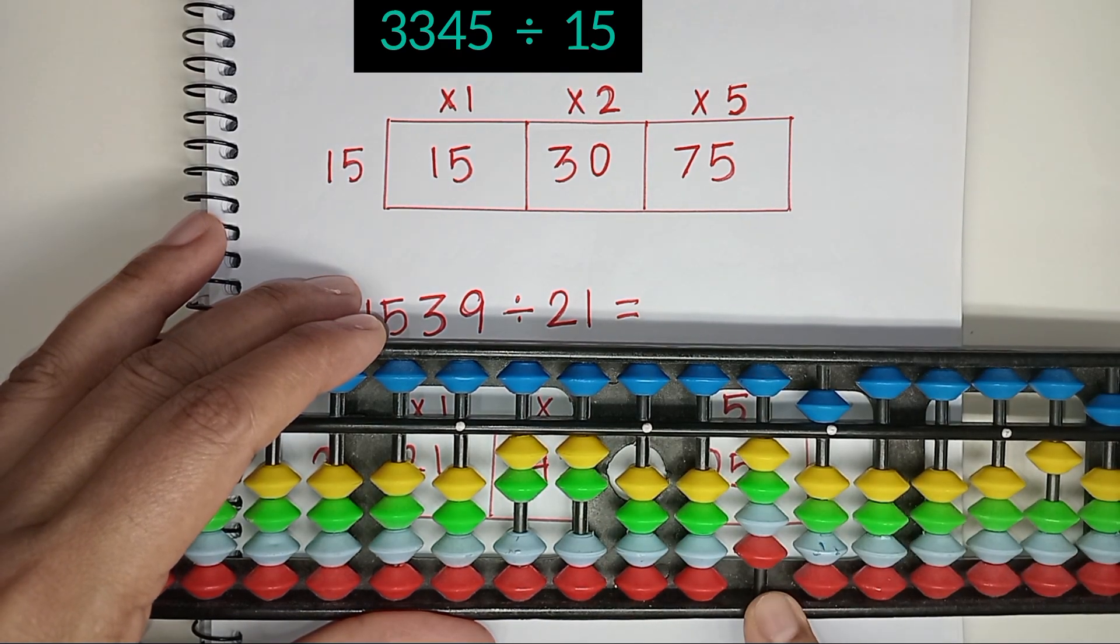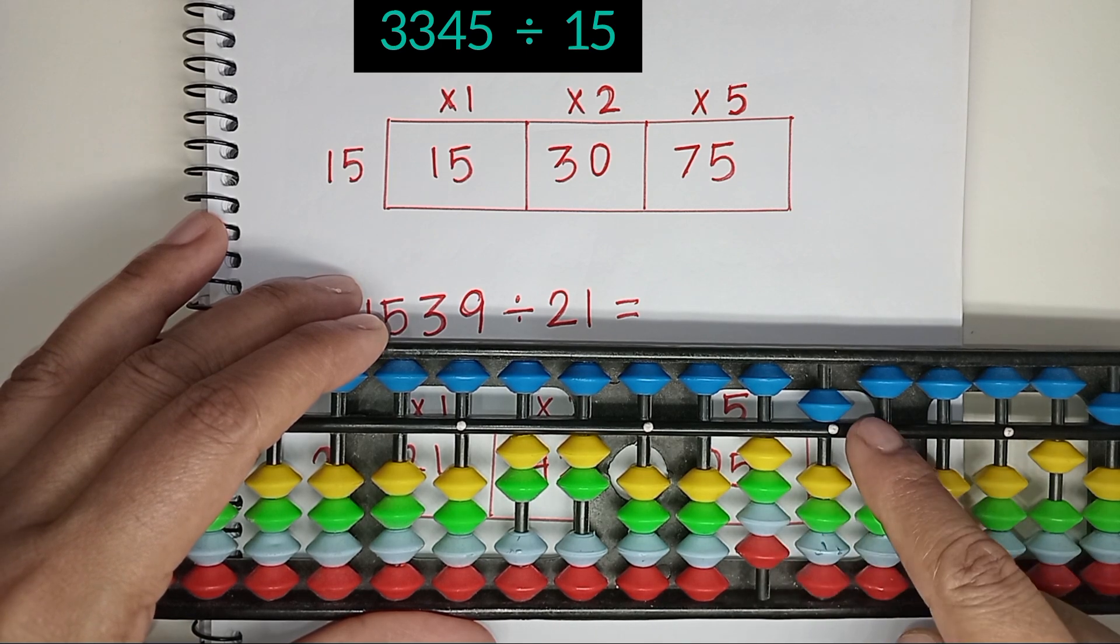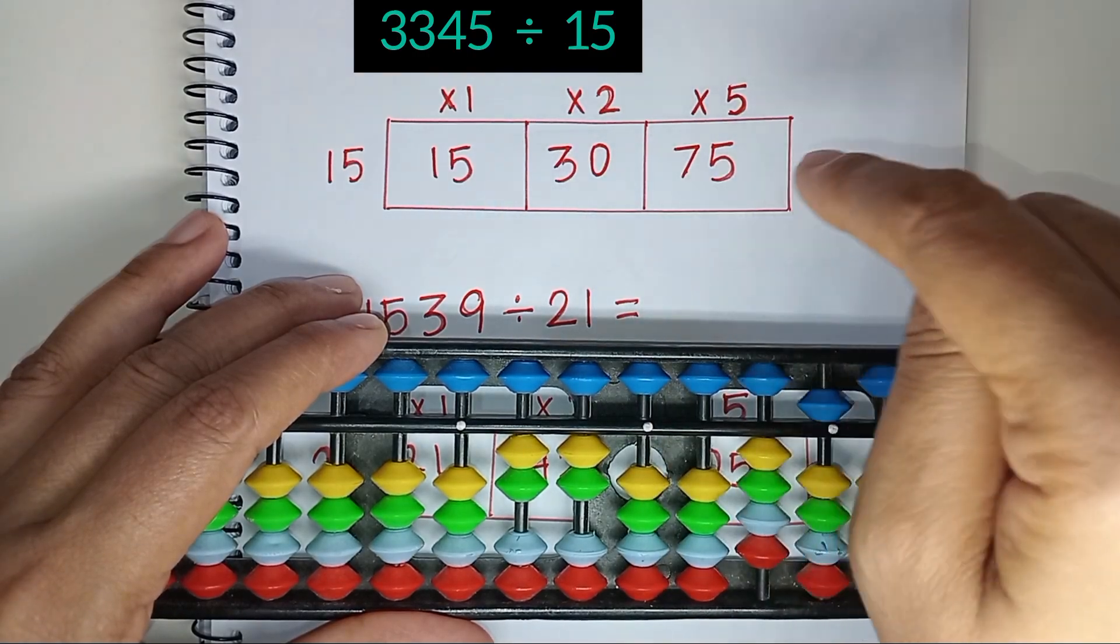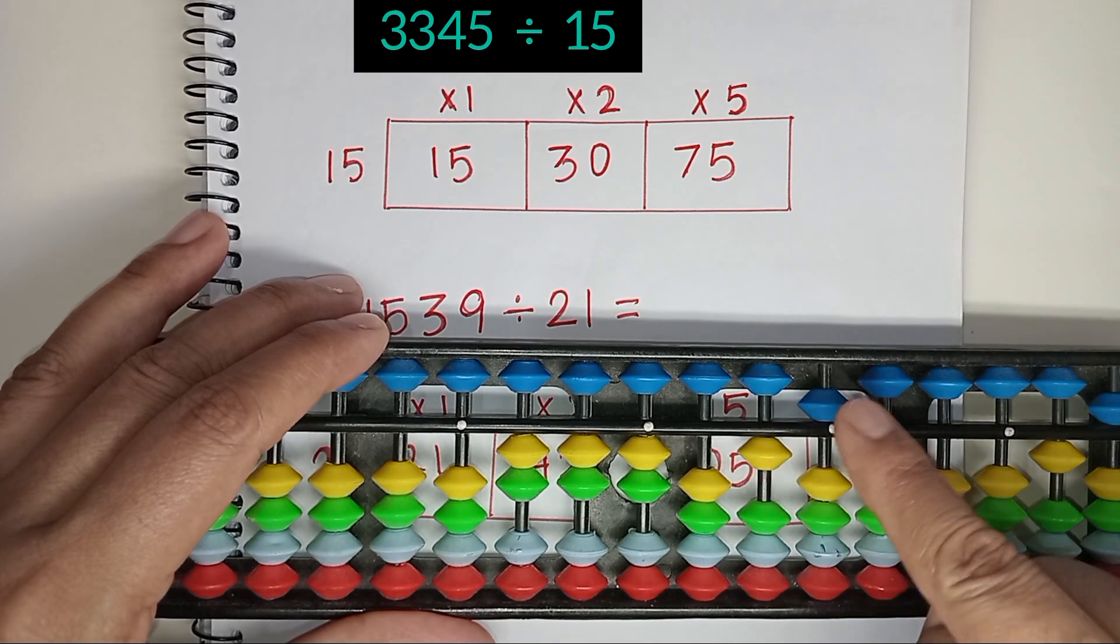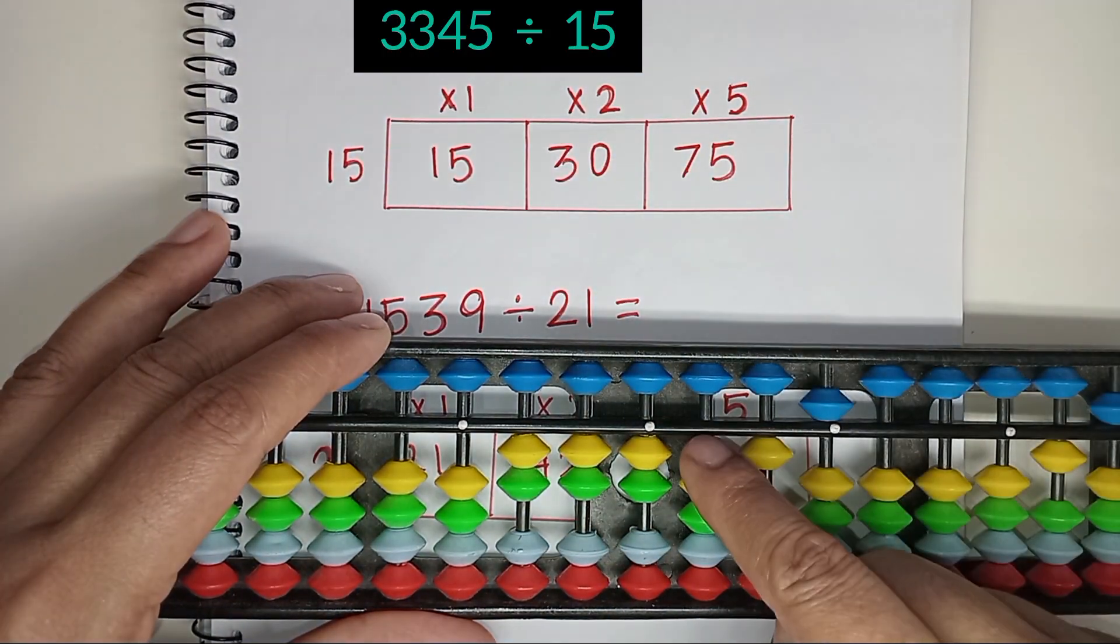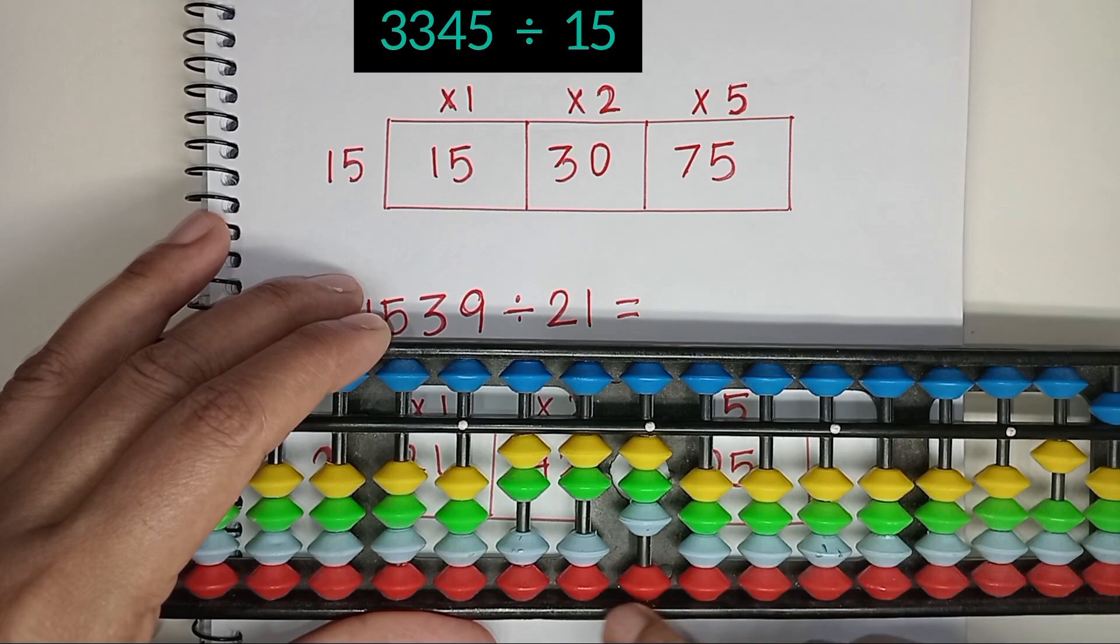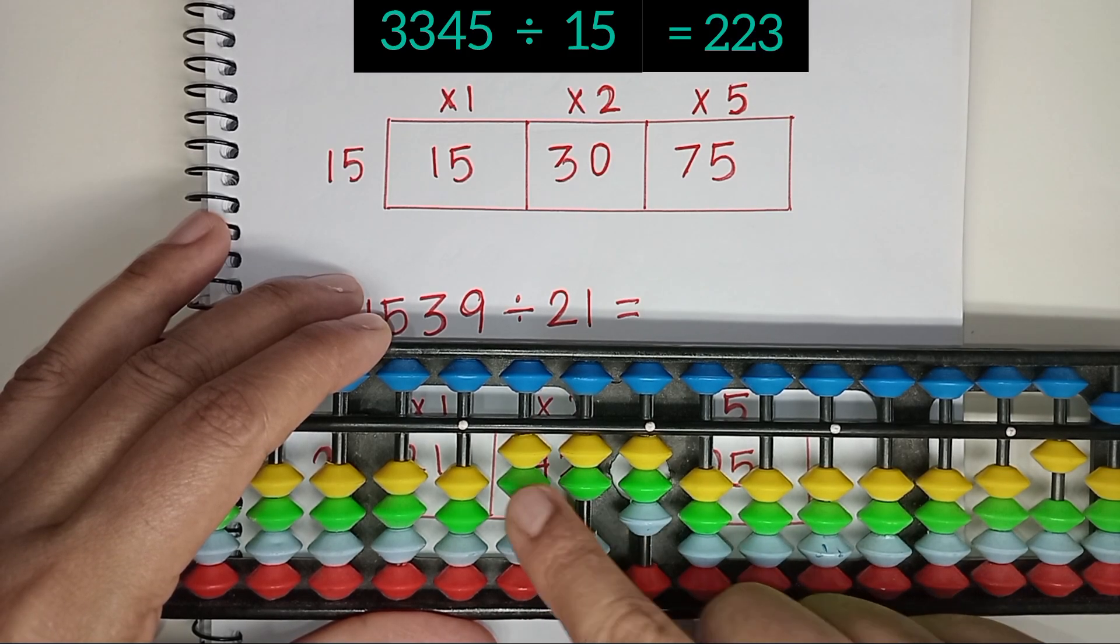As we stopped here, for the next part, we will start from that rod. Consider 2 rods that represent 4 and 5, which is 45. 45 falls between 30 and 75. Again, we need to consider 30. 15 times 2 is 30. 1 and 5, 15 is left. 15 is divisible by 15. 15 times 1 is 15. Jump 1 rod and place the answer here. 15 times 1 is 15. The answer is 2, 2, 3, which is 223.